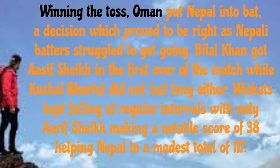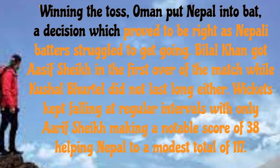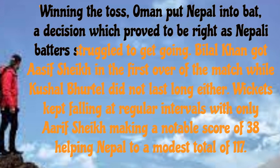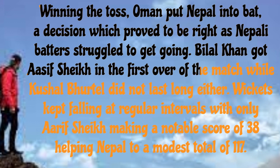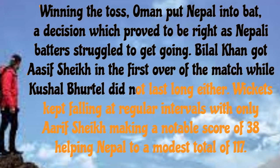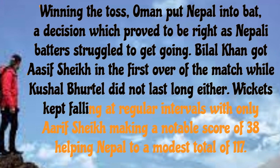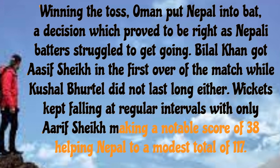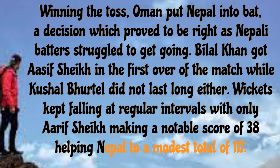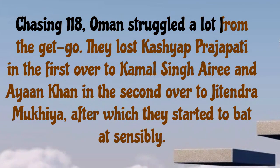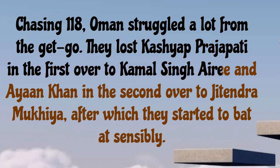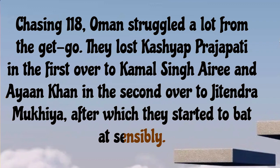Body Paragraphs: Winning the toss, Oman put Nepal into bat, a decision which proved to be right as Nepali batters struggled to get going. Bilal Khan got Asif Sheikh in the first over while Kushal Bhurtel did not last long either. Wickets kept falling at regular intervals with only Arif Sheikh making a notable score of 38, helping Nepal to a modest total of 117. Chasing 118, Oman struggled a lot from the get-go. They lost Kashyap Prajapati in the first over to Kamal Singh Airi and Ayan Khan in the second over to Jitendra Mukhiya, after which they started to bat sensibly.